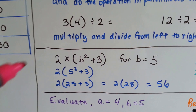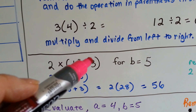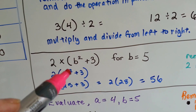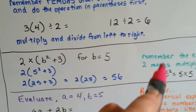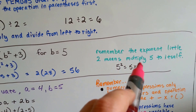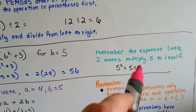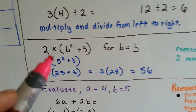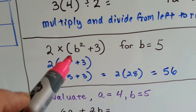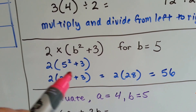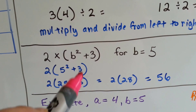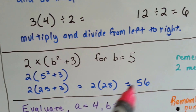If we have 2 times (b squared plus 3) and b equals 5, we do the exponent in the parentheses first. The square means to multiply 5 to itself — 5 times 5. It doesn't mean multiply 5 by 2. If it were a little 3, it would be 5 times 5 times 5. So 5 to the second power is 25, plus 3 gives us 28. Then we multiply by 2 and get 56.